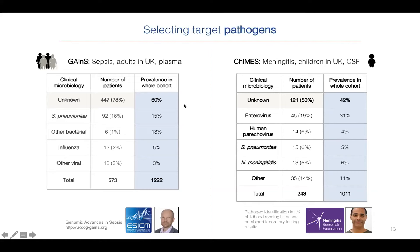The populations are quite different. Data reflect that about 60% of the GAINS samples had unknown etiology — unknown pathogens in terms of lab data — and that was also true for 40% of the CHIMES cohort. For the rest, primary causes identified in the GAINS cohort were Streptococcus pneumoniae, some other bacteria, influenza in few samples, and some other viral samples. In the meningitis cohort, we have pneumococcus, human parechovirus, and enterovirus as the two major viral pathogens in the UK, reflecting very good vaccine coverage — so a lot of meningitis that creeps through is actually viral.